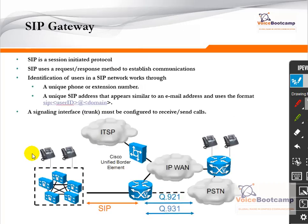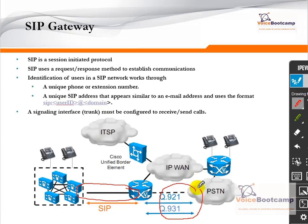SIP — Session Initiation Protocol — uses a request-and-response method to establish communication. Identification of a user is based on a unique phone or extension number in the form of an email address, such as userID@domainname.com. In order to communicate between a SIP gateway and Call Manager, you must create a SIP trunk between the gateway and Call Manager. Same concept as H.323: both Q.921 and Q.931 terminate on the router, the router must have a dial plan matching the information in the Q.931 message, and then sends it across to Call Manager using Session Initiation Protocol.